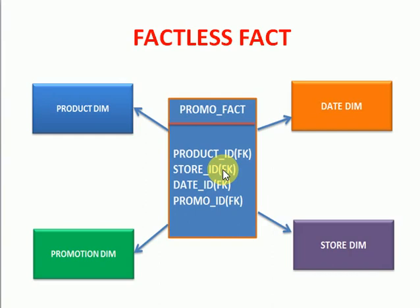Still, if this table doesn't have any measures, what we will do is create an additional dummy column. That dummy column we can maintain as a way of satisfying the requirement to create a factless fact table and design your star schema model. So this is the way we can go for creating a factless fact. Factless fact means it is a fact table but it does not have any measures for a given requirement. Thank you for watching my videos. Please subscribe to my channel to get more videos and updates.